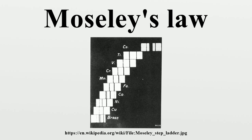Moseley found the screening term was approximately 7.4 for L-alpha transitions, and his fit to data was good, but not as close as for K-alpha lines where the screening value was found to be one. Thus Moseley's two given formulae for K-alpha and L-alpha lines were expressed in his original semi-Rydberg style notation.